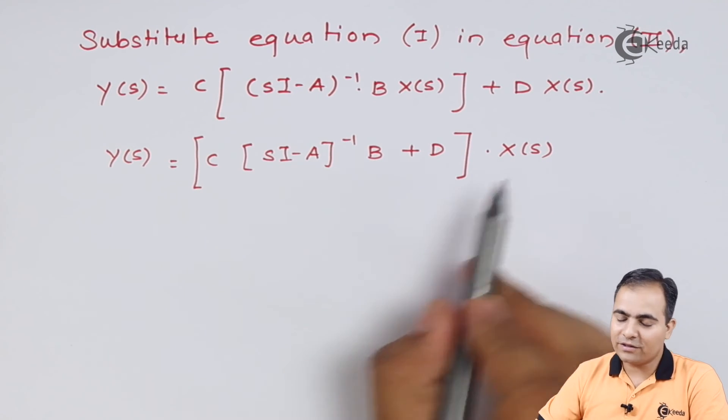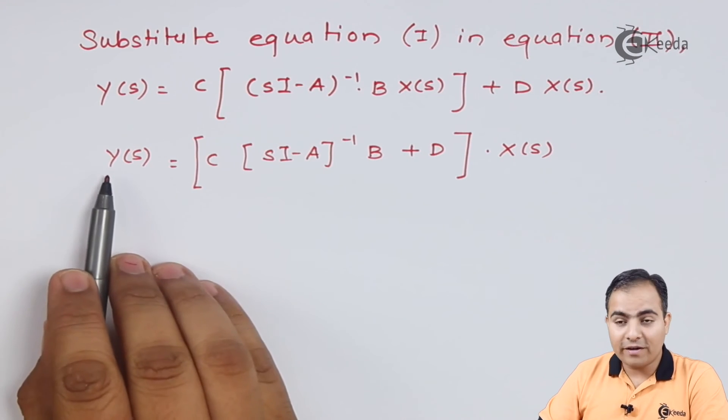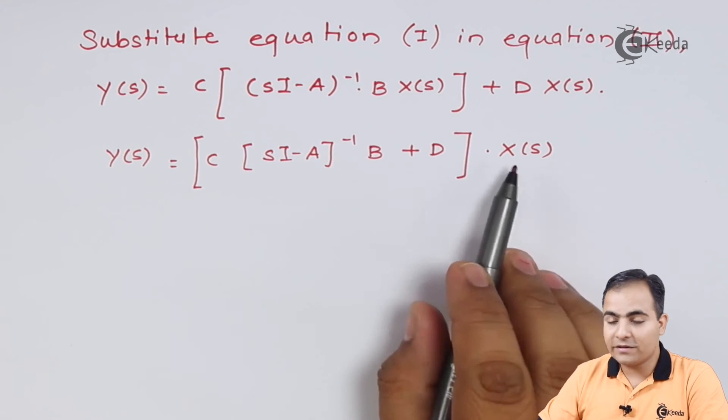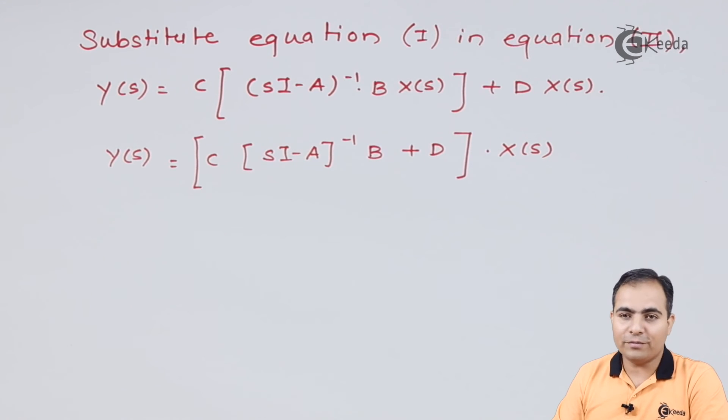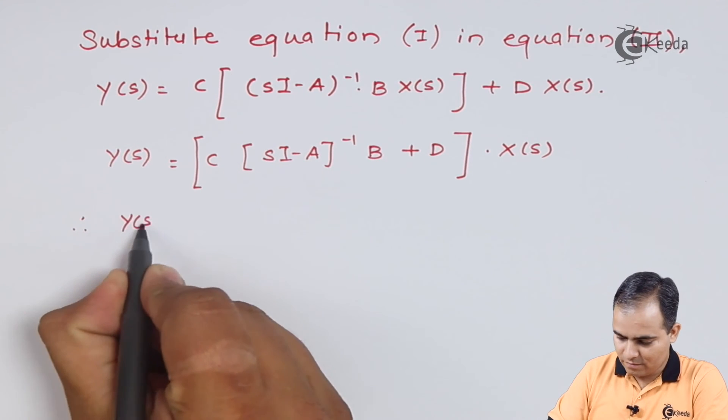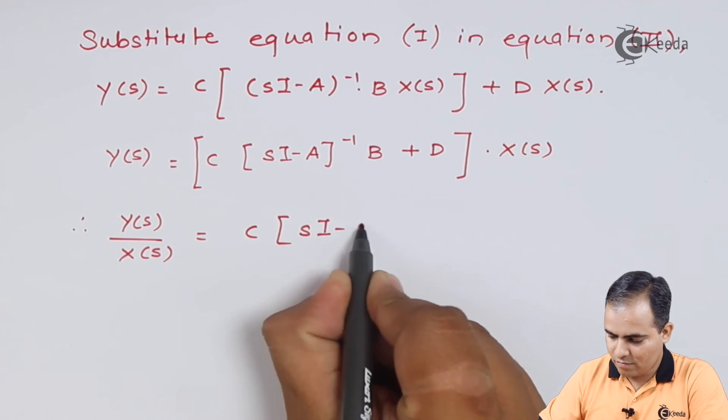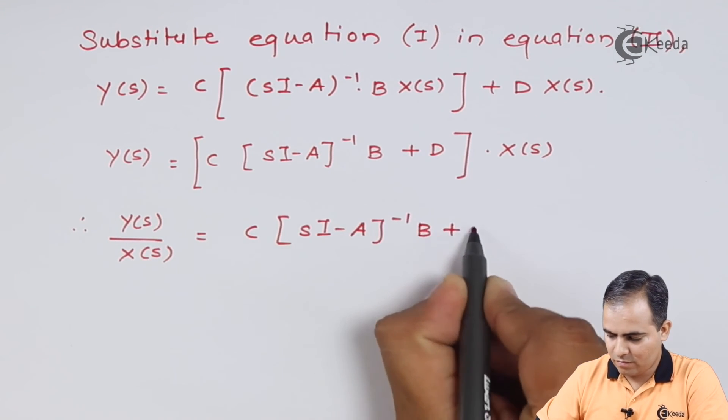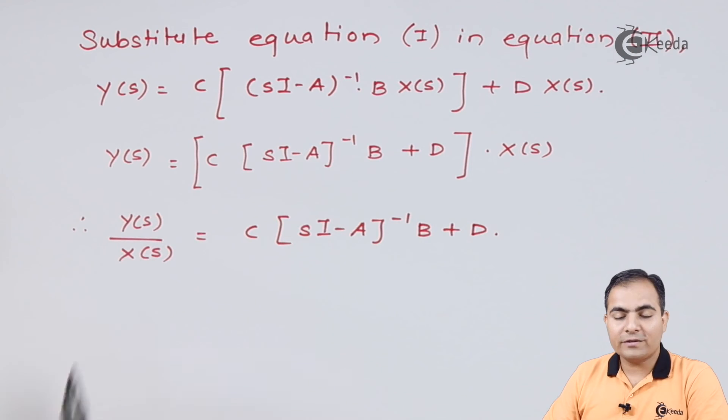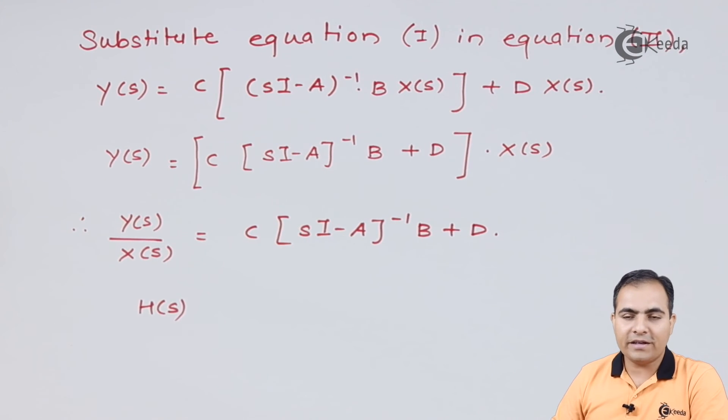So I will shift this X of s on left hand side because my Y of s is my output and my X of s is nothing but my Laplace transform of input. And we know that Y of s by X of s is nothing but my transfer function and it is always represented by H of s.